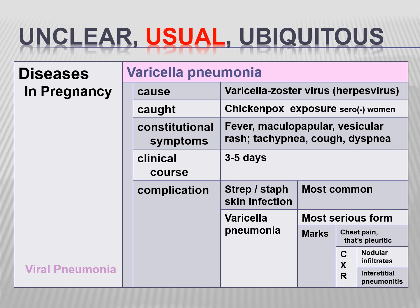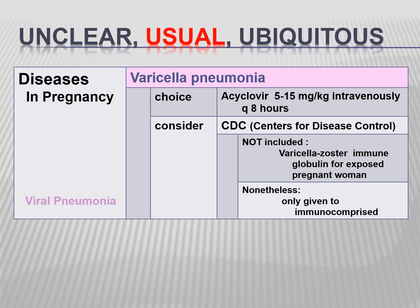Varicella pneumonia is caused by the varicella zoster virus following chickenpox exposure. Constitutional symptoms include fever, maculopapular vesicular rash, cough, and dyspnea. Complications include skin infection caused by Streptococcus or Staphylococcus, and varicella pneumonia marked by pleuritic chest pain. Chest X-ray shows nodular infiltrates and interstitial pneumonitis. Treatment of choice is acyclovir 5 to 15 mg/kg IV every 8 hours. Varicella immunoglobulin should be considered for exposed pregnant women and is given only to the immunocompromised population.